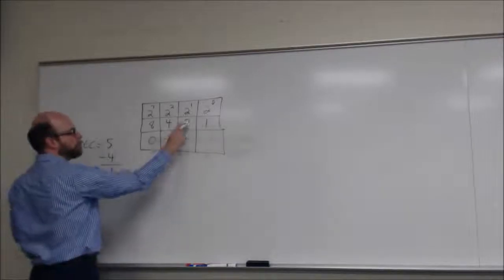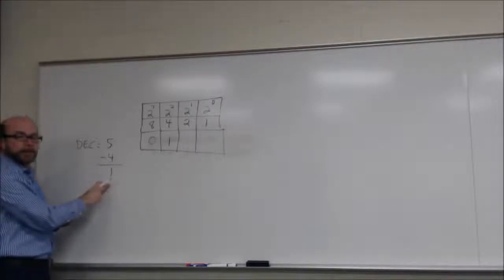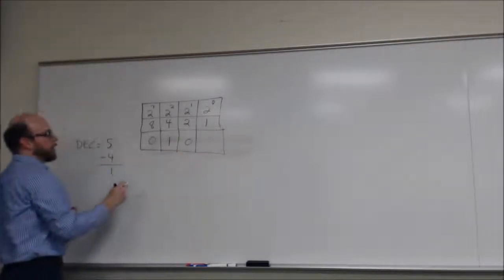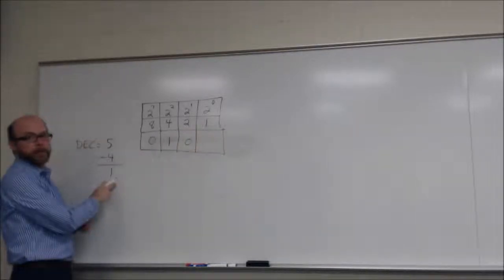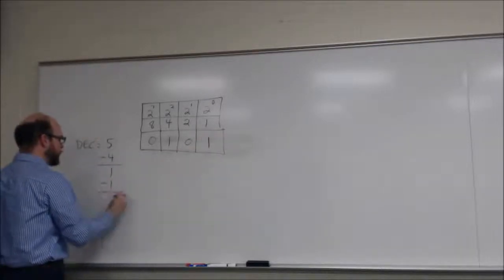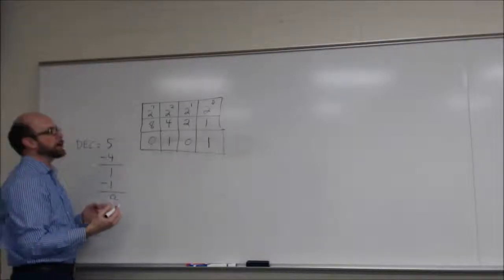So we go to the next bit value, which is two. Is two less than or equal to one? The answer is no. So we put zero. And then we go to the next one, which is, is one less than or equal to one? The answer is yes. So we put a one there, subtract one, we get to zero. So we've completed our calculation process.